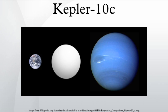Kepler-10c is an exoplanet orbiting the G-type star Kepler-10, located around 568 light-years away in Draco. Its discovery was announced by Kepler in May 2011, although it had been seen as a planetary candidate since January 2011, when Kepler-10b was discovered.